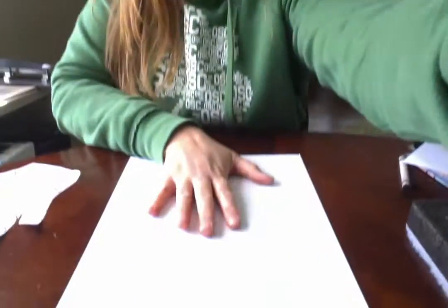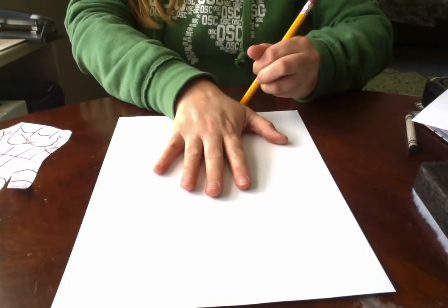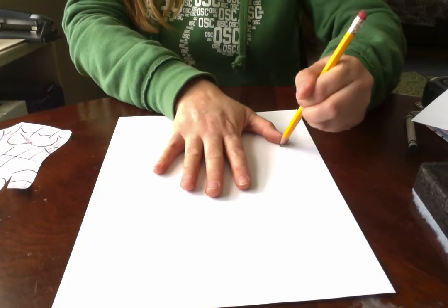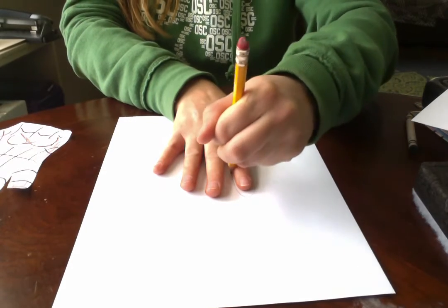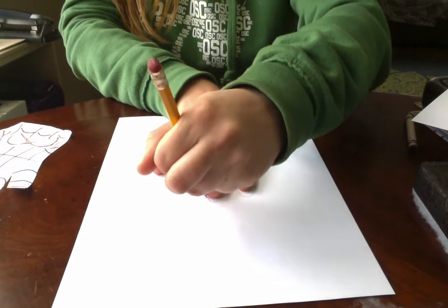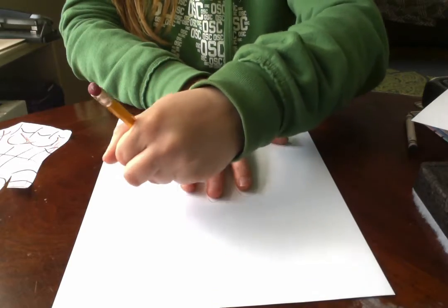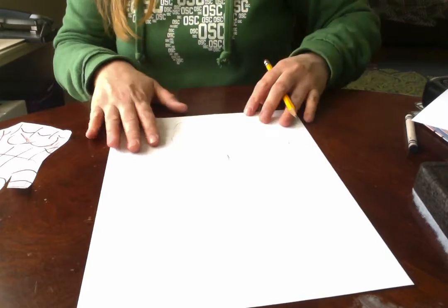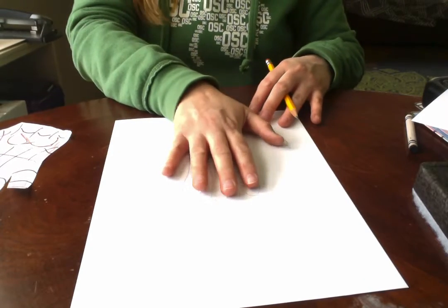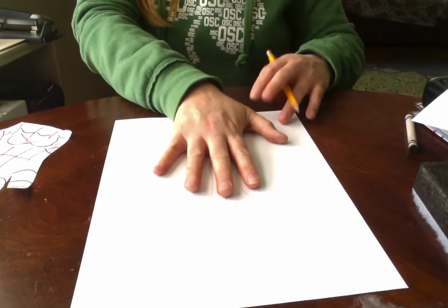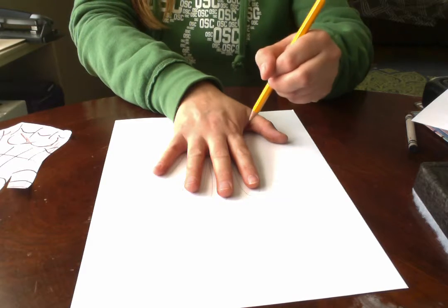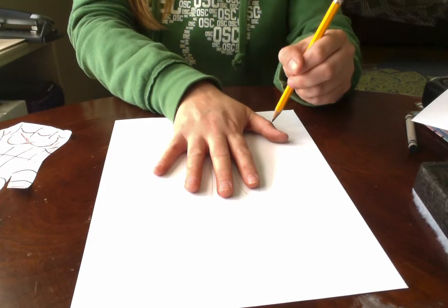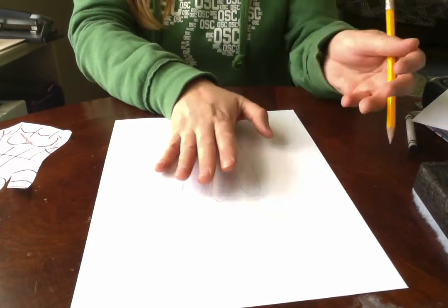So the first step is we're going to take our pencil and trace our hand on the paper just like this. Okay, so students should be able to do that. If not, you can modify the task and just have them hold their hand down and you trace it, or they could trace your hand if that's easier.